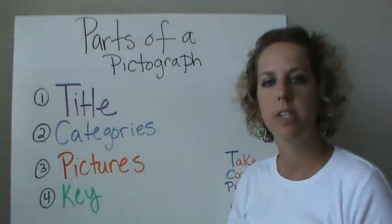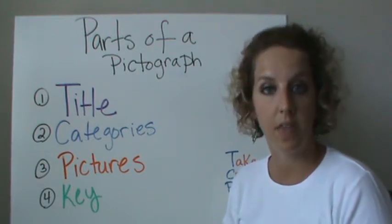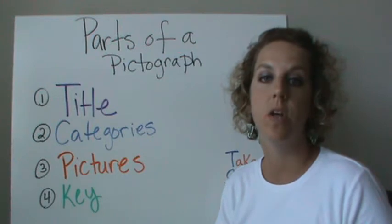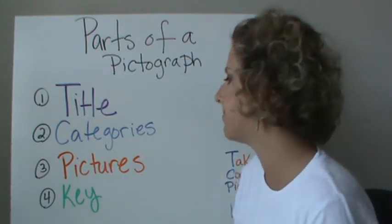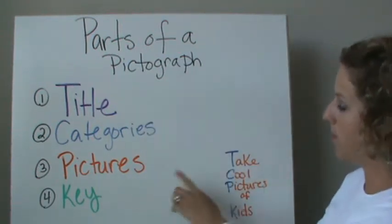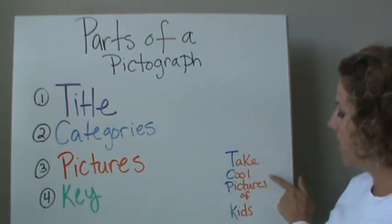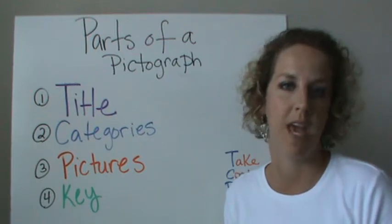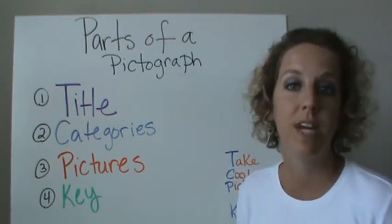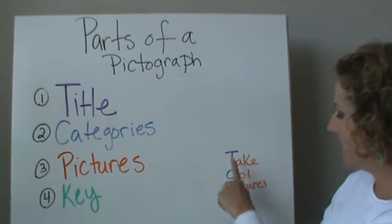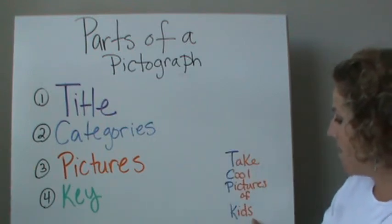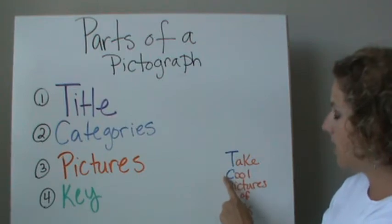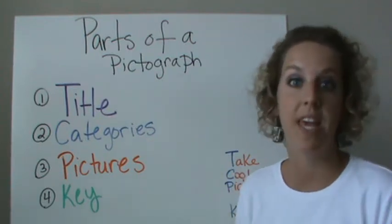You want to make sure, just like with a bar graph, a line plot, or any other graph, to space it out just right so that it looks organized. A cool way to remember those four parts is to take cool pictures of kids — or kangaroos, or whatever K-word you want. That's how I remember title, categories, pictures, and the key.